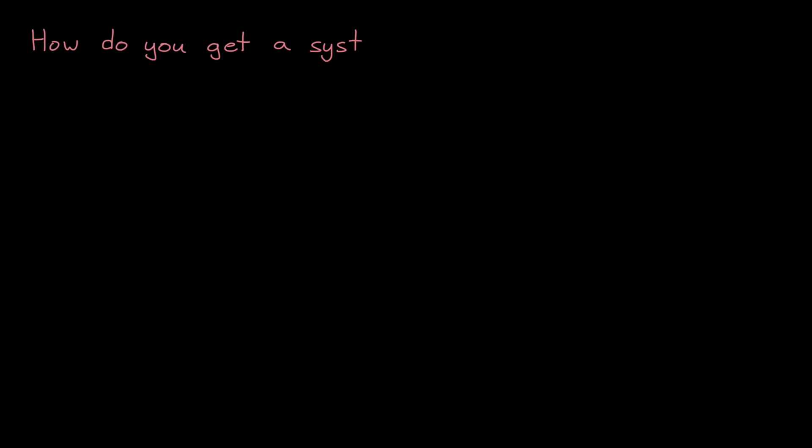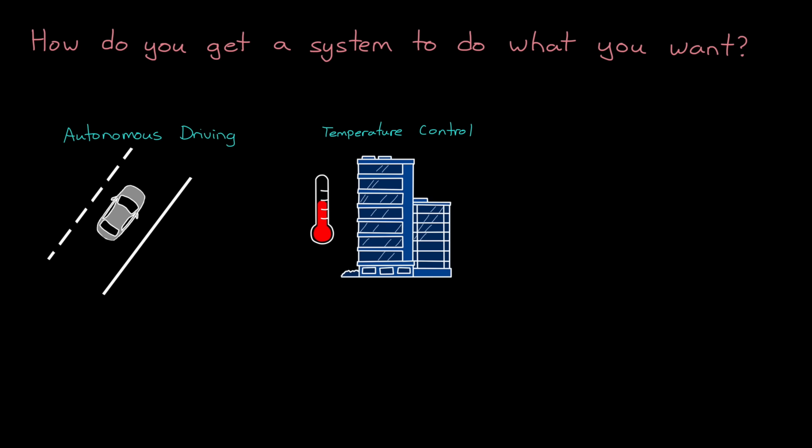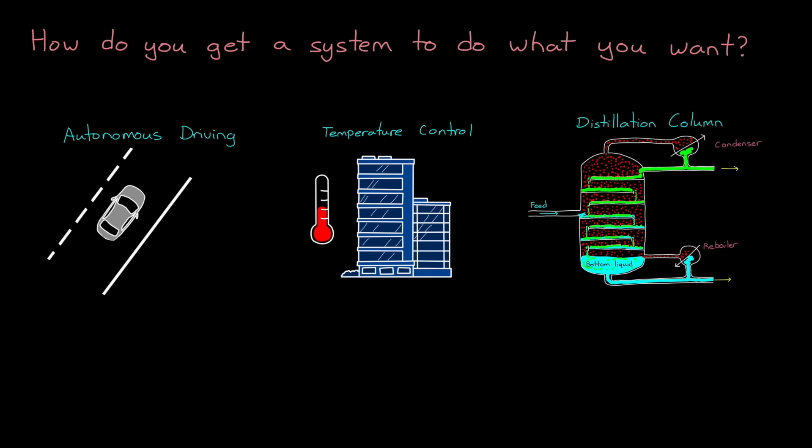An important question that has to be answered when you're designing an autonomous system is how do you get that system to do what you want? How do you get a car to drive on its own? How do you manage the temperature of a building? Or how do you separate liquids into their component parts efficiently with a distillation column? To answer those questions, we need control theory.